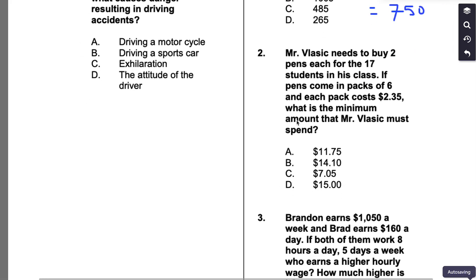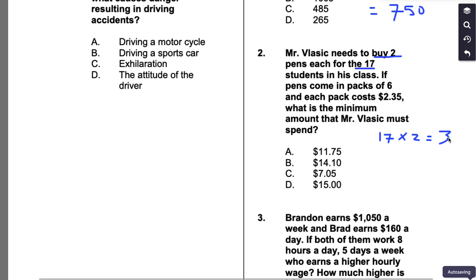Number two: Mr. Vlasic needs to buy two pens each for the 17 students in his class. If pens come in packs of six and each pack costs $2.35, what is the minimum amount Mr. Vlasic must spend? We take 17 students multiplied by 2 pens each, which gives us 34 pens total that we need.